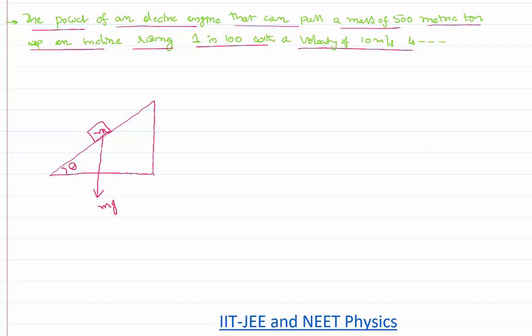it is obvious that this also becomes theta. I can resolve now this mg, being a vector, into components. This is an adjacent component mg cos theta. This is the opposite component mg sine theta.